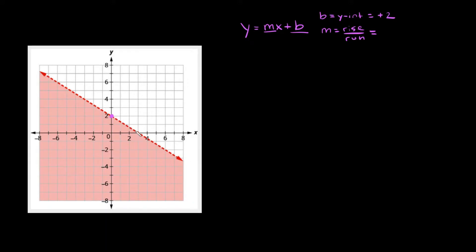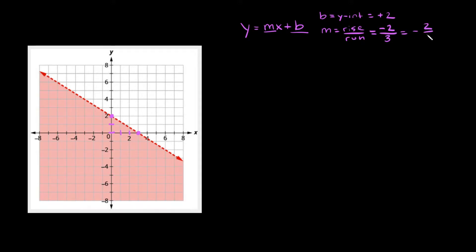There's another point right there — the line goes through the point at three comma zero. To figure out the slope, you move from your left point to the point on the right. To get from here to here, first we go down two, then go over three. So the rise is negative two and the run is positive three, giving us a slope of negative two over three.